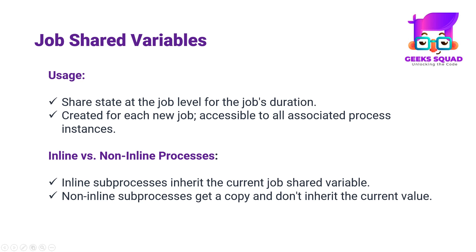Job shared variables are designed to share state at the job level for the entire duration of the job. Each new job creates a copy of the job shared variable, making it accessible to all process instances associated with that specific job. It's important to note the difference in behavior between inline and non-inline subprocesses. Inline subprocesses inherit the current job shared variable, whereas non-inline subprocesses obtain a copy and do not inherit the current values from the caller process.